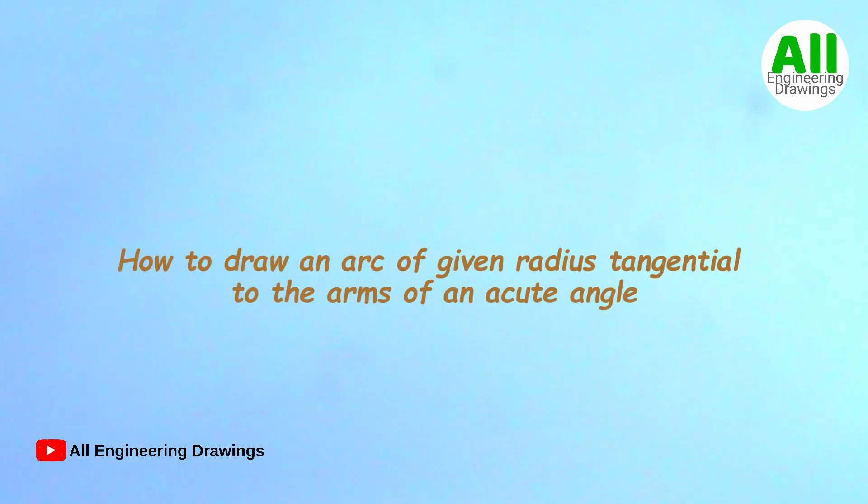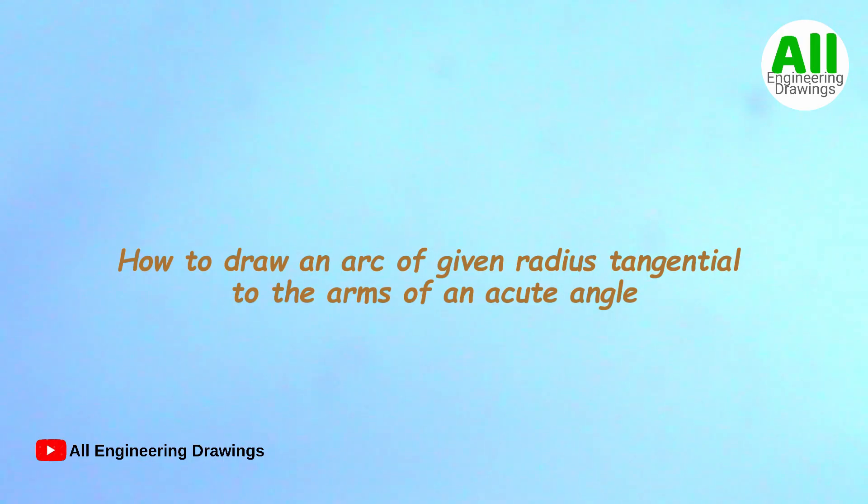Good day and welcome to this video. In this video I'll be showing you how to draw an arc of a given radius tangential to the arms of an acute angle. The first thing to do is to draw your acute angle. Remember, acute angles are angles that are less than 90 degrees. So first I will draw an acute angle of my choice.